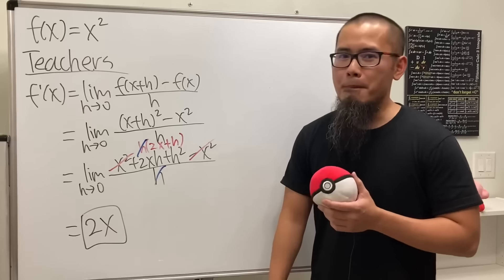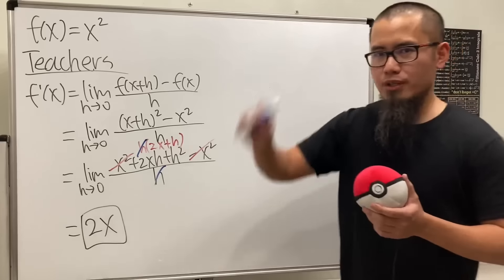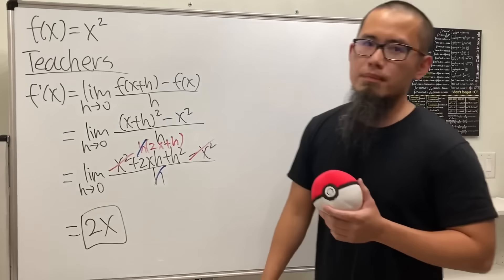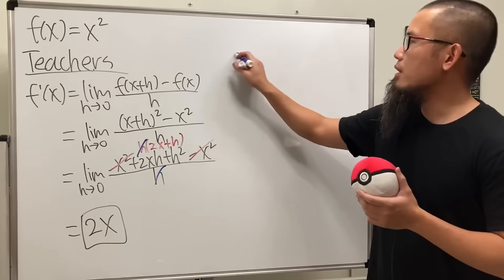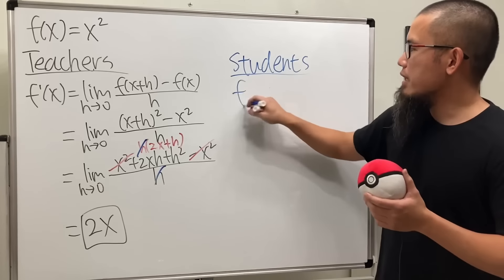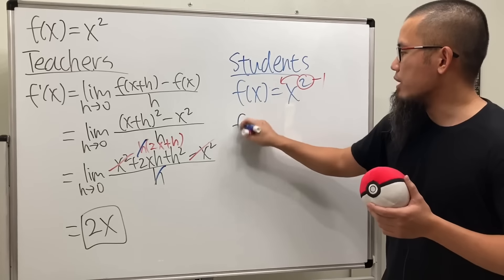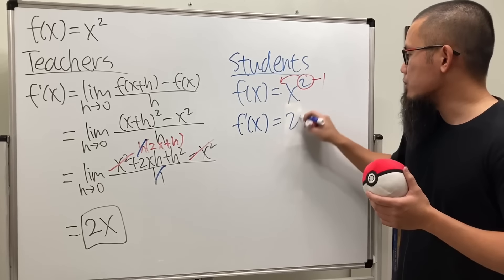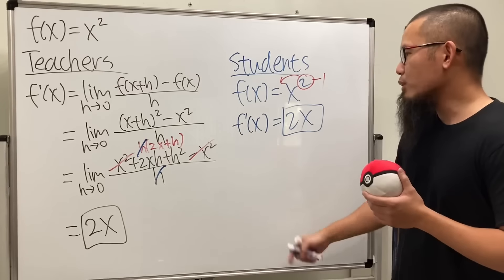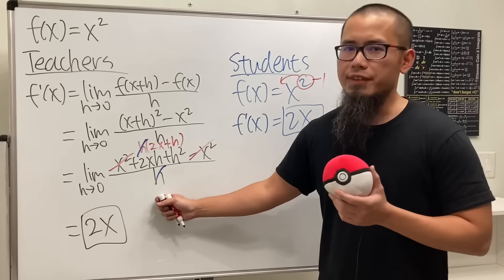Now we can just put the zero in here and we just end up with 2x. Wow, cool! But you know, there's always going to be at least one student: Teacher, teacher, can't you just look at the two and bring that to the front and minus one and you're done? Let me show you guys what I mean. Sometimes students would just say bring the two to the front, minus one, and then you get f'(x) and you just end up with 2x to the first power, and then you're done in like two seconds. Impressive!